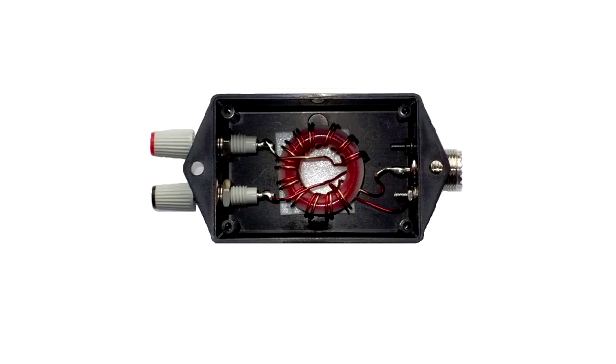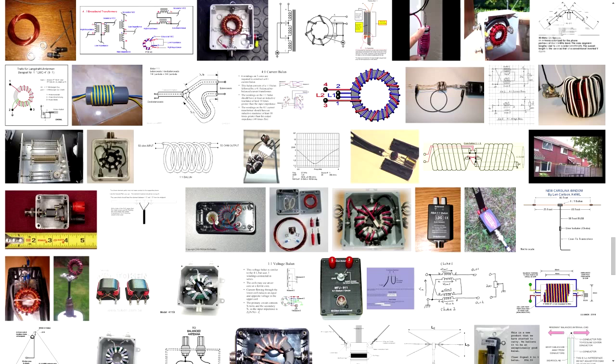As a toroid, ferrite material exponentially increases both the inductance of the wire wrapped through it and the inductively coupled resistance by the number of turns squared. The associated capacitance is increased only linearly as the number of turns. It's the resistance which is important because resistance reduces common-mode current, whereas inductance mainly shifts the resonant frequency of the common-mode antenna.